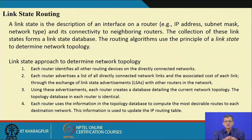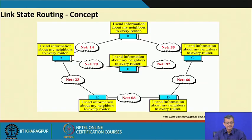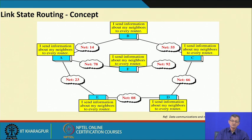This information is used to update the routing table. Each router advertises its link states, every router receives the information and builds its own network topology, and using this link state database it finds the optimal route to the destination network. Individual routers have this instance of the network at a particular time and then find the best possible path and update the routing table, which is used for packet forwarding.